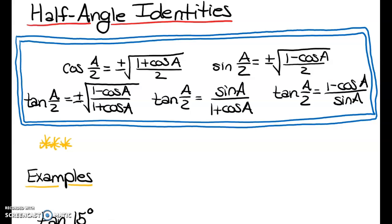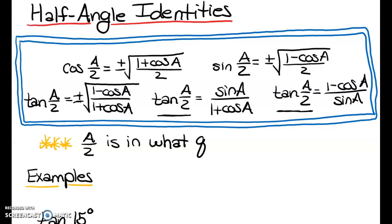The other two tangent formulas don't have a plus-or-minus, so you won't need to determine a quadrant for those. But anything that has a plus-or-minus in front of it requires you to know which quadrant A/2 is in. If you don't know the quadrant, you won't know whether to pick the positive or the negative version.